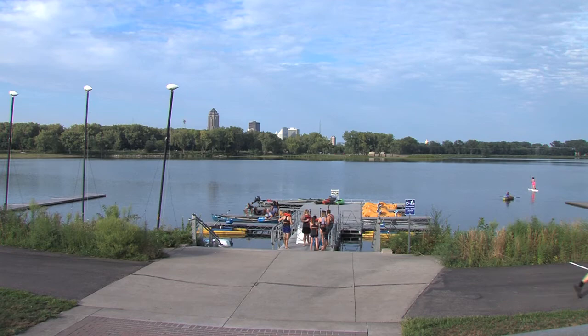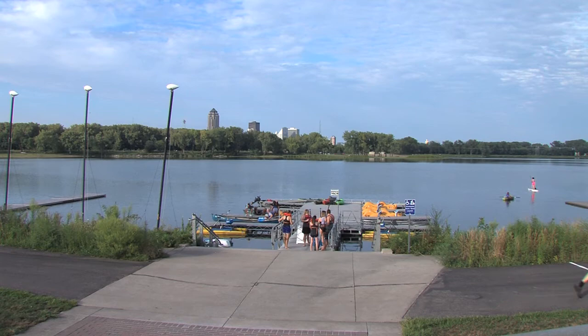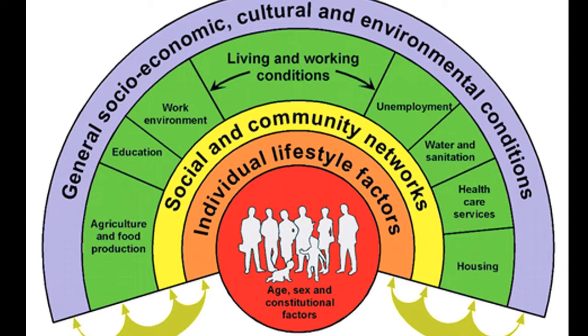Social determinants of health are conditions under which people live and work that influence health and quality of life. They are societal risk conditions rather than individual risk factors that either increase or decrease the risk of disease such as type 2 diabetes. Another way to think about the social determinants of health is they are the conditions that are beyond the ability of an individual to impact on their own. We developed a series of activities to help us engage our staff to address these changes and be more proactive about how we can better serve our community.